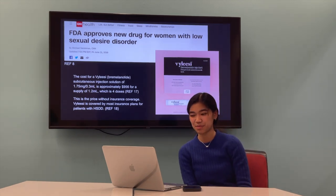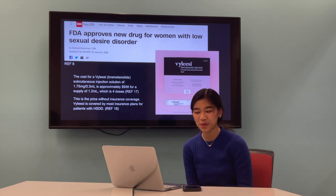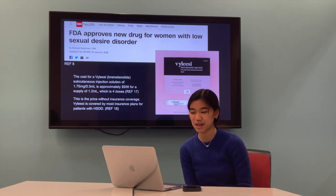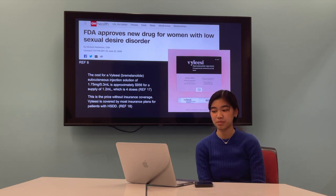The cost for a Vyleesi subcutaneous injection solution of 1.75 milligrams, or 0.3 milliliters, is approximately $956 for a supply of 1.2 milliliters, which is four doses. But Vyleesi is covered by most insurance plans for patients with HSDD.